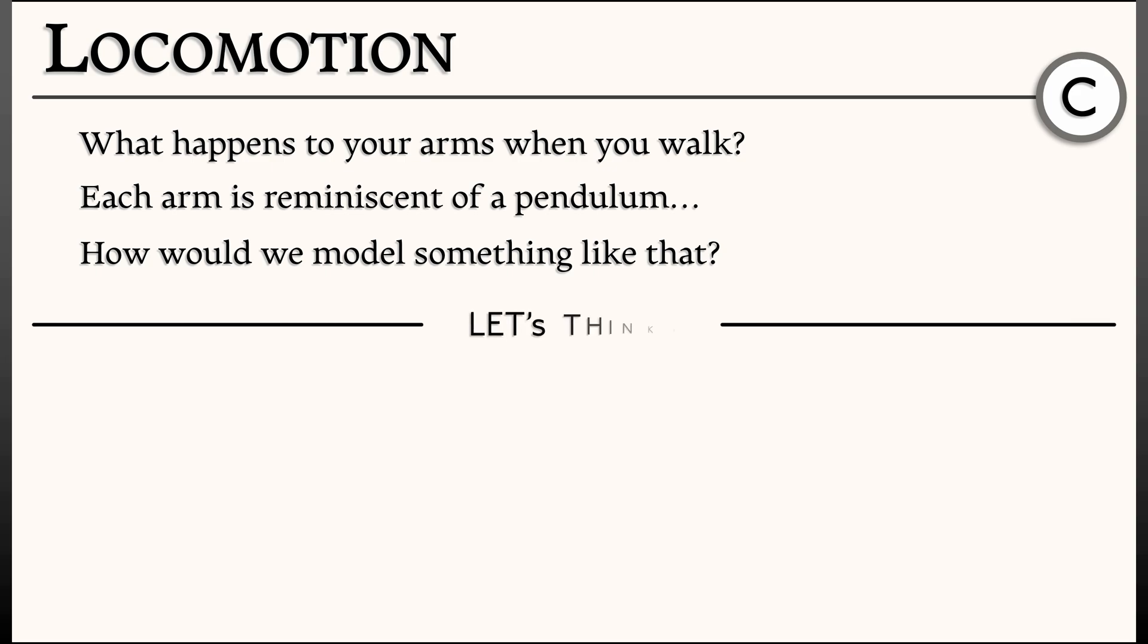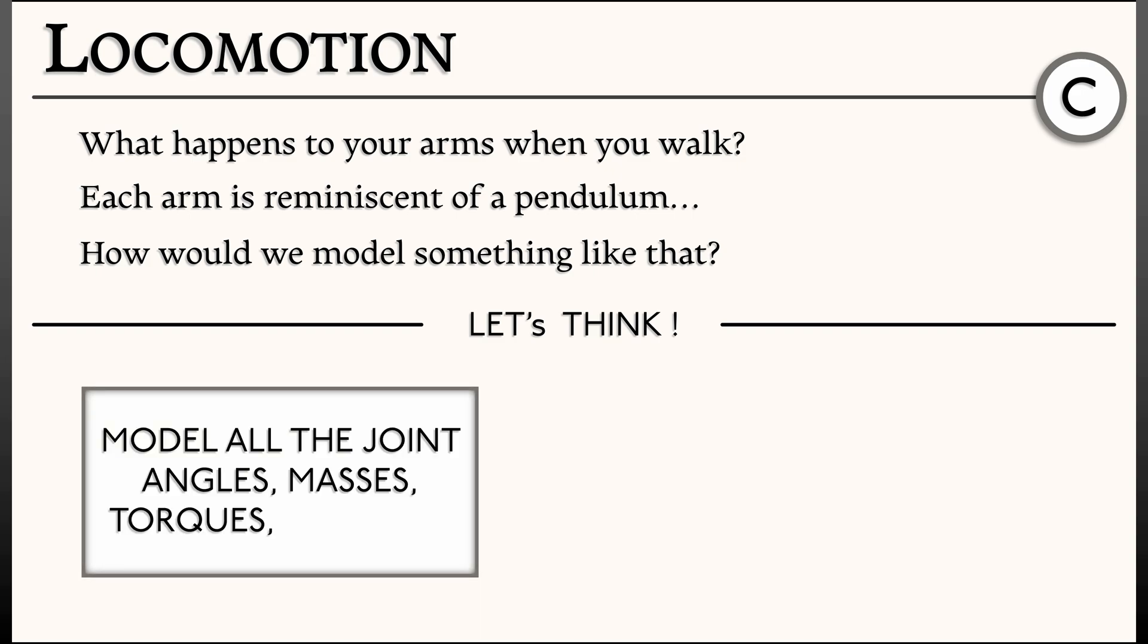Well, let's think. The natural inclination might be to figure out all the different joint angles. You've got your shoulder. You've got your elbow. You've got your wrist. You might want to assign masses to all the different components of your arms. You have to take into account the torque as your shoulders are swinging back and forth. What kind of spring constants you have. Boy, that would be a mess.